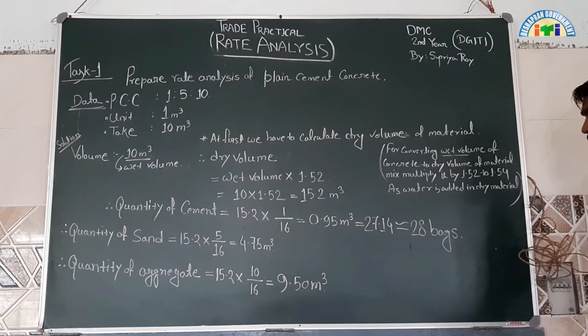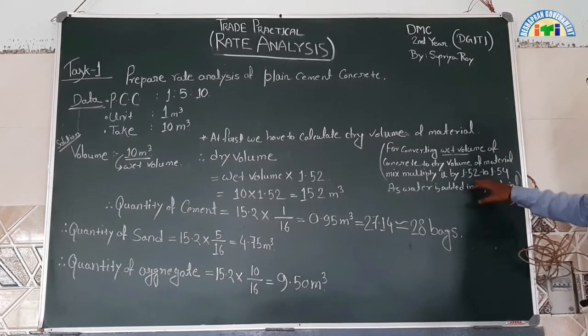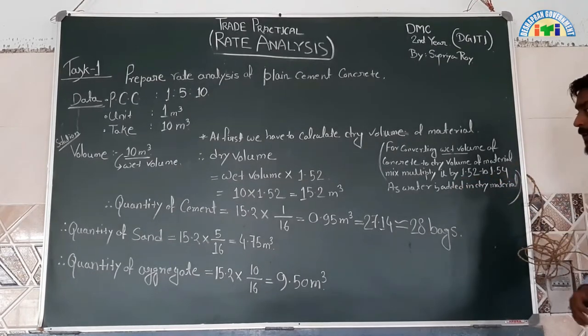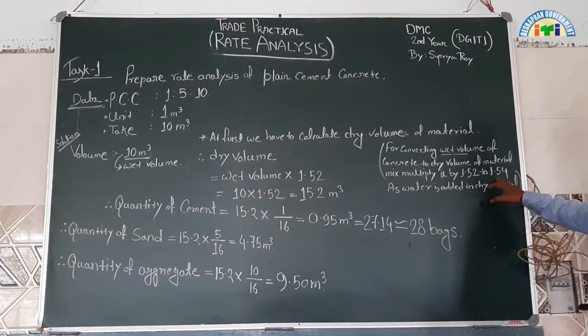We will calculate using 1.52 to 1.54. Why 1.54? Because when water is mixed with the material, the dry volume increases by 54%. So we will calculate using 1.52 to 1.54.